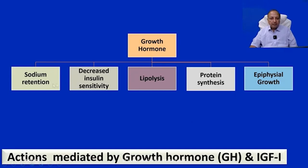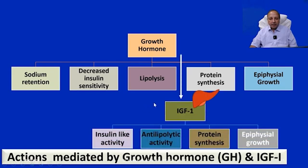Growth hormone directly causes retention of electrolytes, is diabetogenic, decreases insulin sensitivity, is lipolytic (reducing body fat), increases protein synthesis, and increases stature. Via IGF-1, there are insulin-like effects: decrease in blood glucose, anti-lipolytic (lipogenesis), protein synthesis, and epiphyseal growth. Although these are counter-regulatory to the direct actions, ultimately the action of growth hormone is always diabetogenic overall. Growth hormone and IGF-1 are the two primary pathways through which growth hormone mediates its effects on the body.